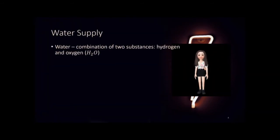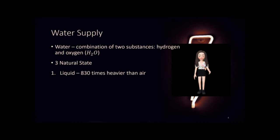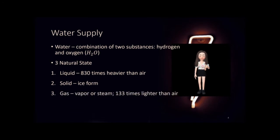The water supply. Water is a combination of two substances, namely hydrogen and oxygen, or H2O. Water has three natural states: the liquid, solid, and gas states. The liquid state is 830 times heavier than air, while the solid state is in the form of ice. The gas state is in the form of vapor or steam, which is 133 times lighter than air.